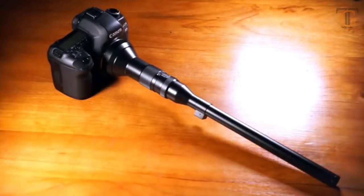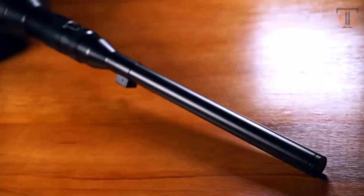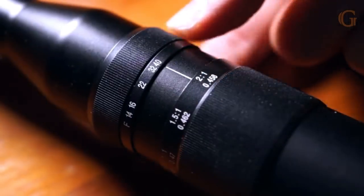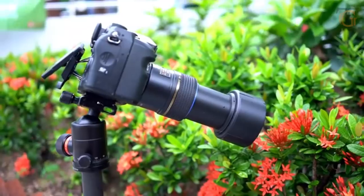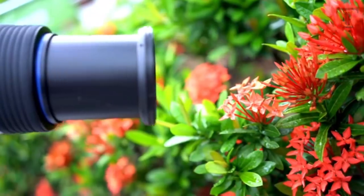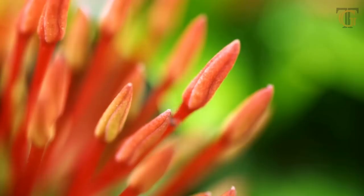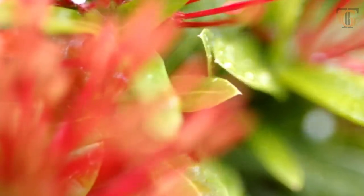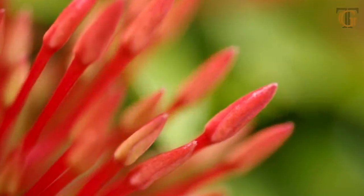Introducing the Laowa 24mm probe lens, the weirdest, but most creative and revolutionary macro tool ever. Traditional macro lenses in the market tend to have a long focal length, varying from 60 to 100mm, or even longer. The subject fills most of the frame and is isolated from the surrounding environment.